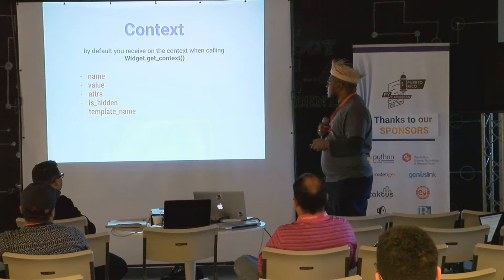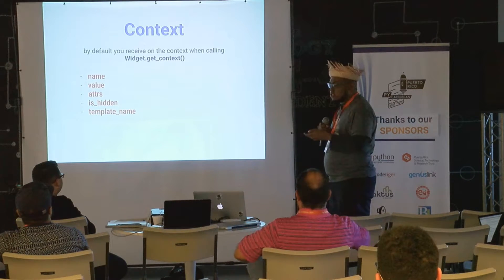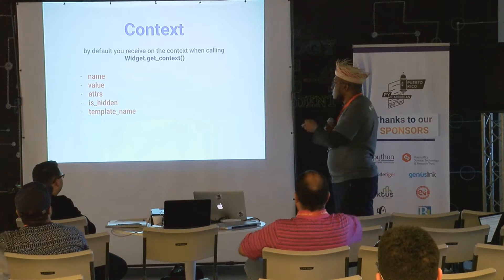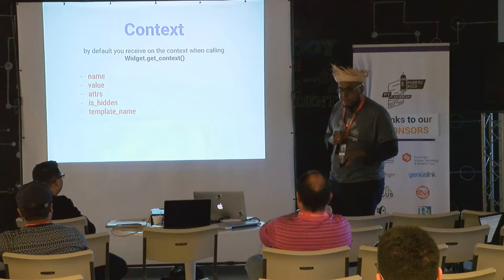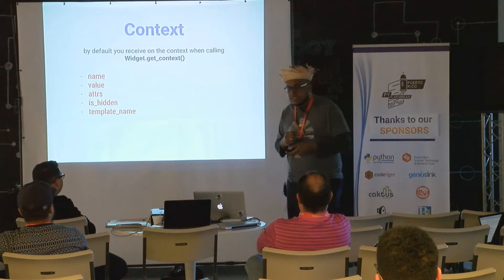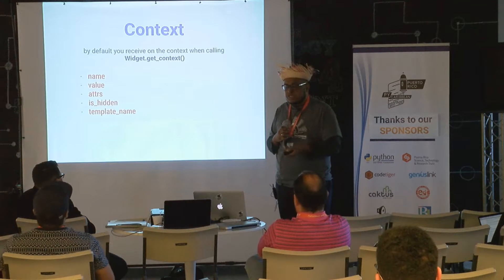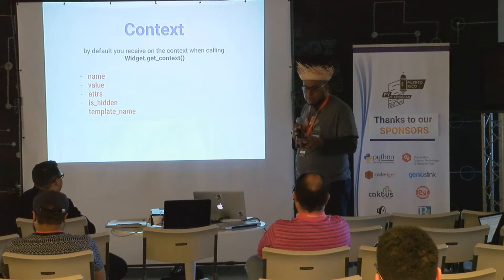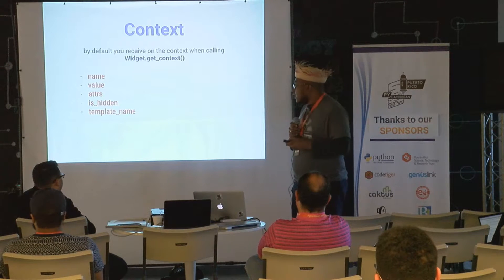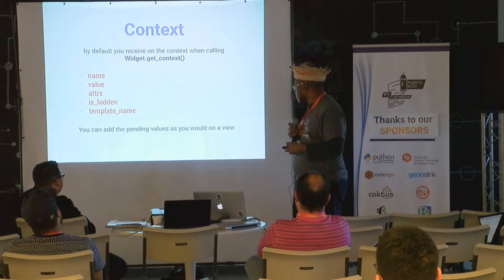The context that you provide on the widget, just as you do with a view, has these elements: the name, the value, the attributes, and it's hidden — because sometimes the elements you want to display on your HTML should be hidden. And of course, the template_name that you know from views.